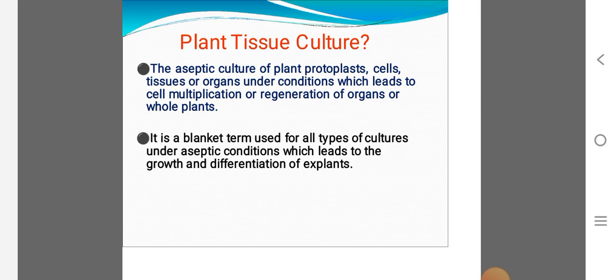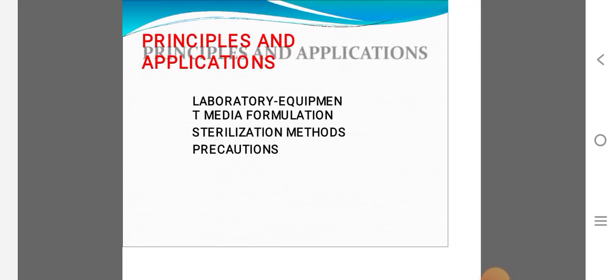Here one cell to produce more number of high number of cells, regeneration of organs. It is a blanket term used for all types of cultures. In all types of cultures, aseptic conditions, growth like differentiation of the explants in you culture.